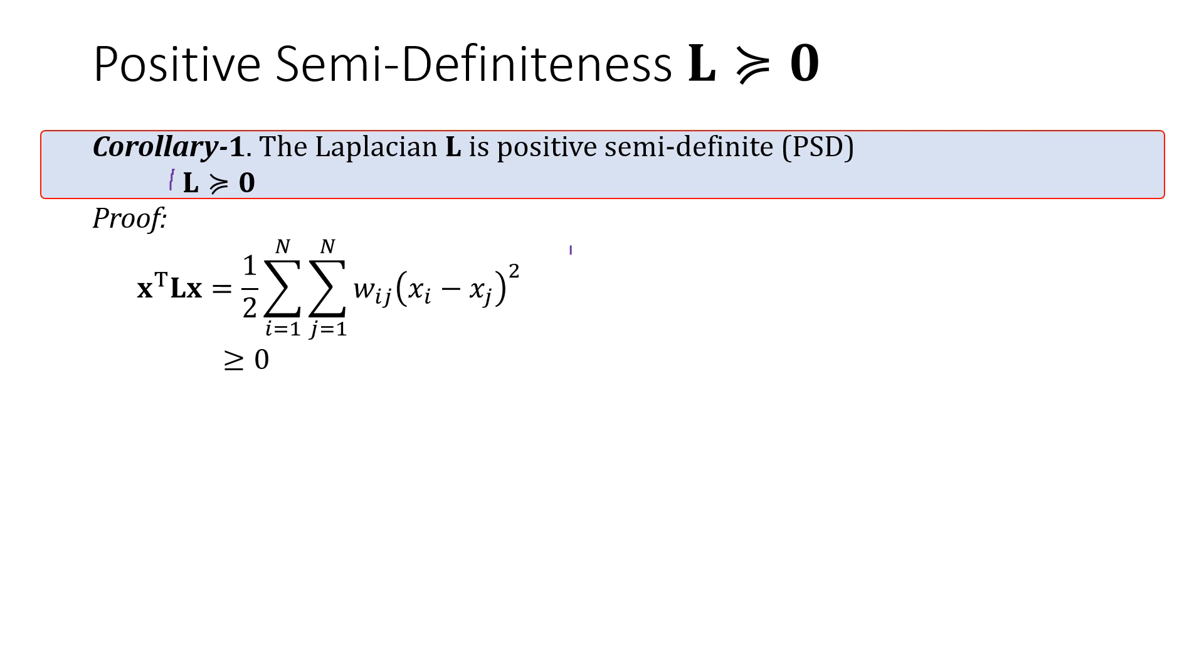We know that x transpose Lx is always greater than or equal to zero, because wij is always positive. All the weights are positive, and this is a square term, xi minus xj squared. So x transpose Lx will always be greater than or equal to zero for any x, which means that L is positive semi-definite.